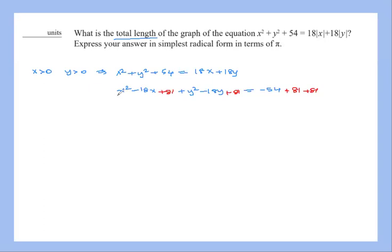And now we have these three terms, which is the same as (x - 9)². And then these three terms is (y - 9)². So if you add these guys, you get 108. And this is the equation that we have actually for our circle.